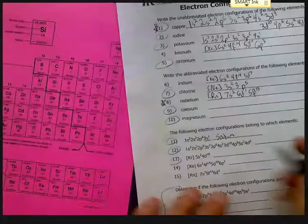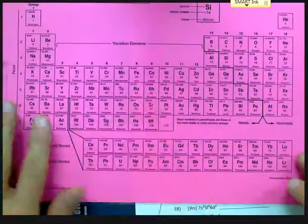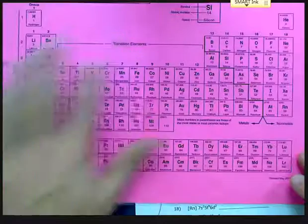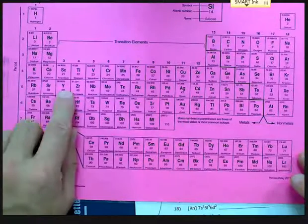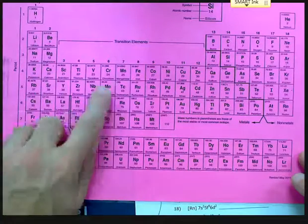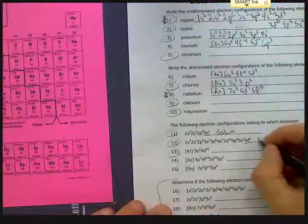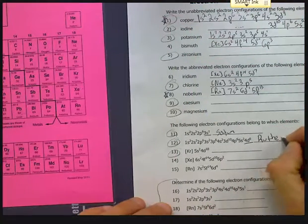Try the same trick here. This ends in 4d6. So the d-block is here in the middle, 4d means we're at the 5th energy level, and 4d6 means we've got six into the d-block, ruthenium, R-U. So we have ruthenium.